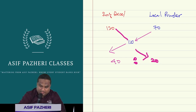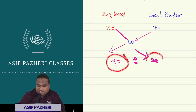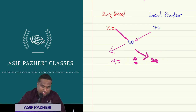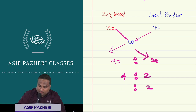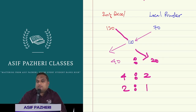He must mix 40 kg Surf Excel with 20 kg local soap powder. In other words, it is 4 is to 2, which simplifies to 2 is to 1. The ratio of Surf Excel to local soap powder is 2:1.